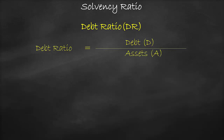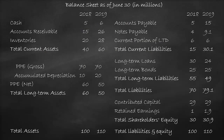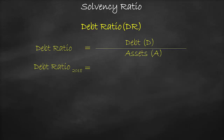We can get both the debt and assets from the balance sheet. So let's calculate the debt ratio for the year 2018. Total liabilities are equal to $70 million from the balance sheet, divided by total assets of $100 million from the balance sheet, which is equal to 70%.